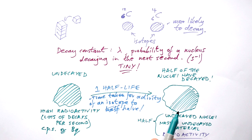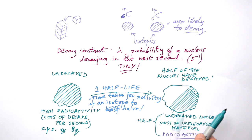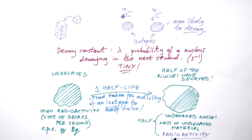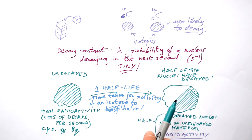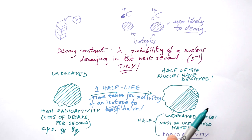If we went on from here another half-life, how much of the undecayed nuclei, mass, and radioactivity would we have left? Well, it would be a quarter, because we've gone through one half-life so we've gone down to half, then another half-life so it's gone down to a quarter.